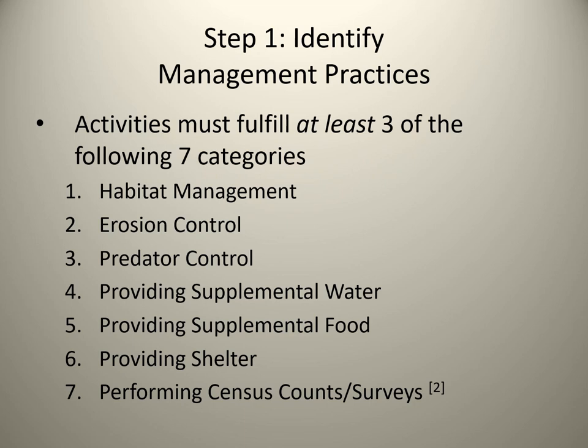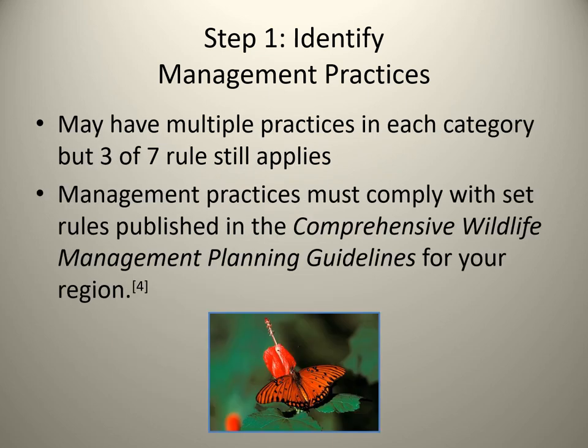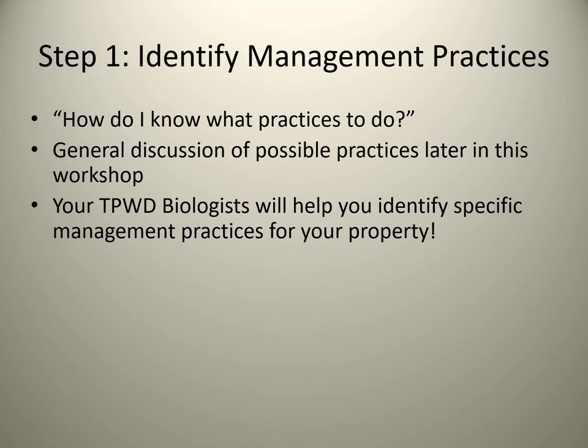The seven categories are: habitat management, erosion control, predator control, providing supplemental water, providing supplemental food, providing shelter, and performing census counts or surveys. You may identify multiple practices in each category, but you are only required to complete three out of the seven categories. Management practices must comply with set rules published in the comprehensive wildlife management planning guidelines for your region, found on Texas Parks and Wildlife's website. Focus on practices which you are passionate about and ones you know you can complete each year.